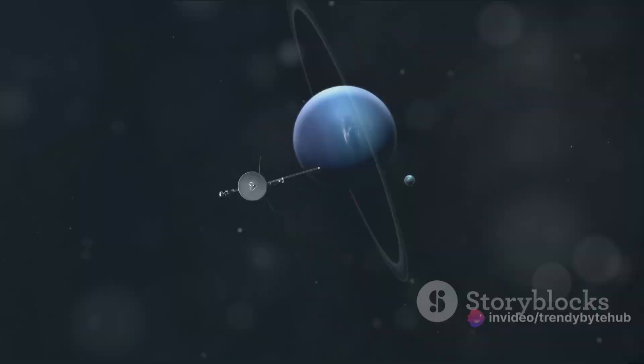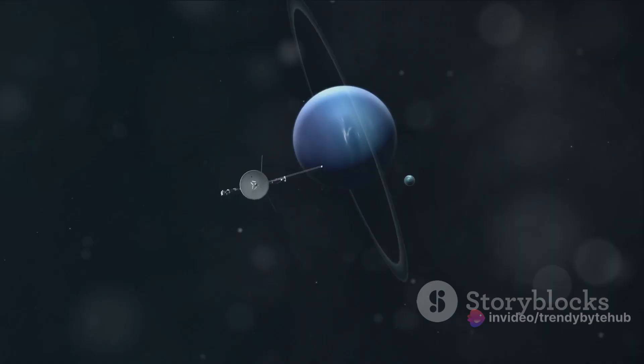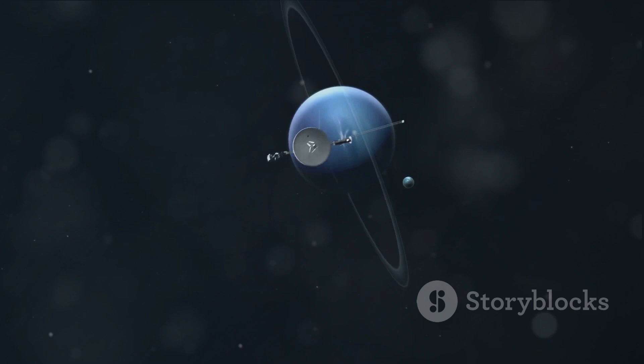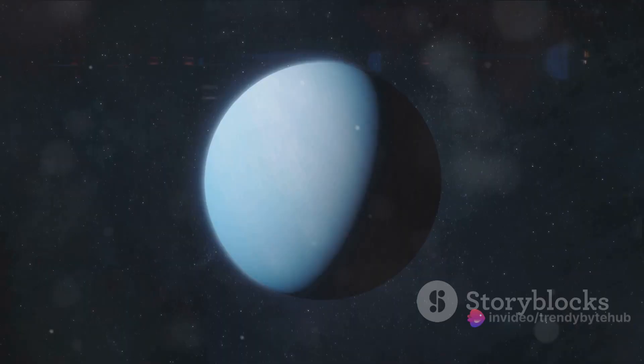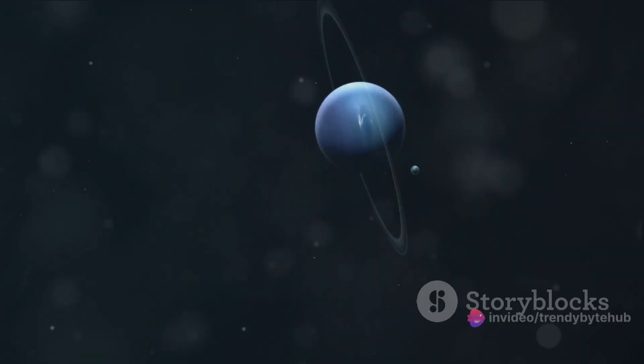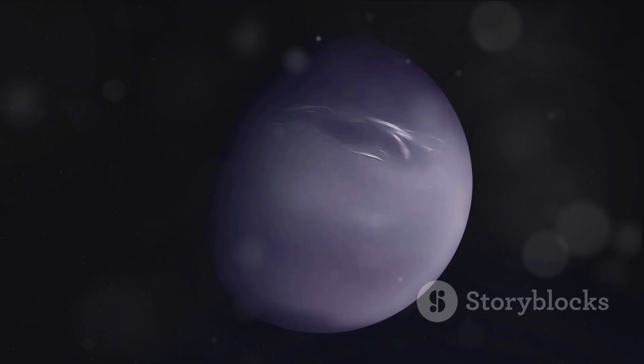What recent discoveries have we made about this distant blue giant? In recent years, our knowledge of Neptune has grown in leaps and bounds, thanks to the efforts of astronomers and technologists alike. One of the most exciting findings is the discovery of new moons orbiting Neptune. In 2022, scientists identified a new moon, bringing Neptune's known moon count to 15. This tiny moon named Hippocamp is less than 20 miles in diameter and offers tantalizing clues about Neptune's history and the chaotic early days of our solar system.